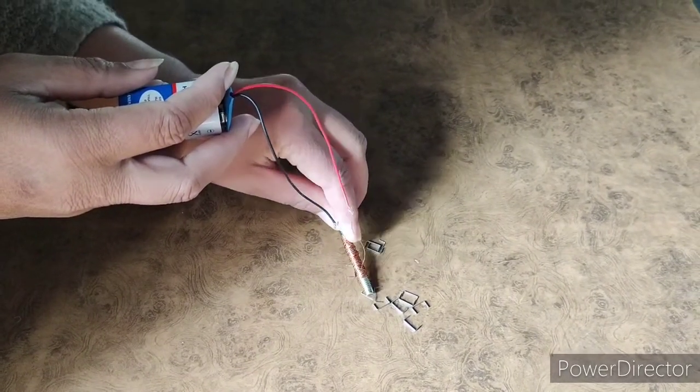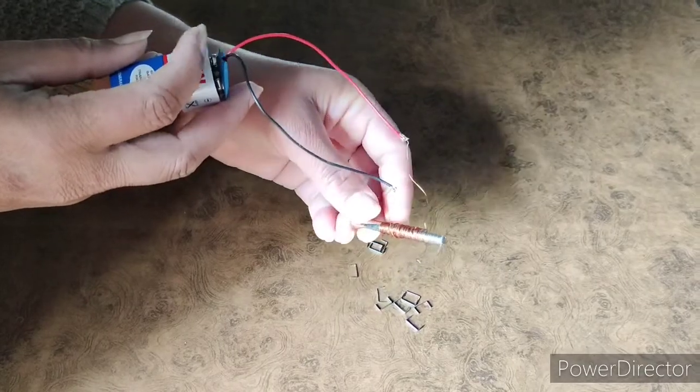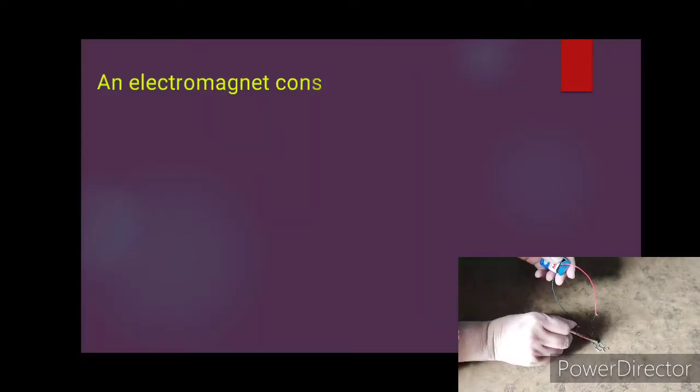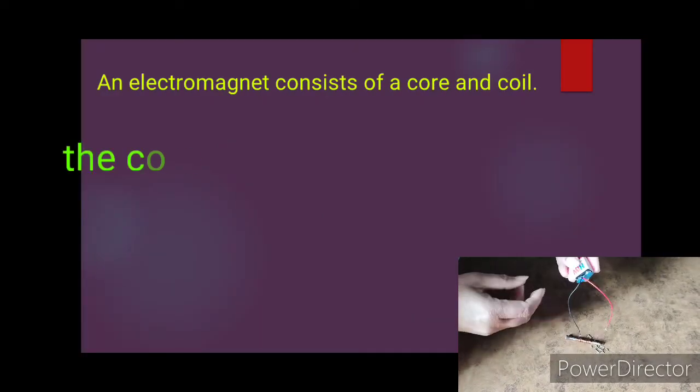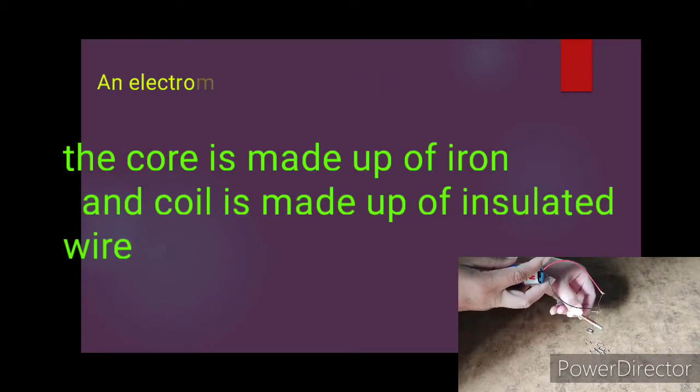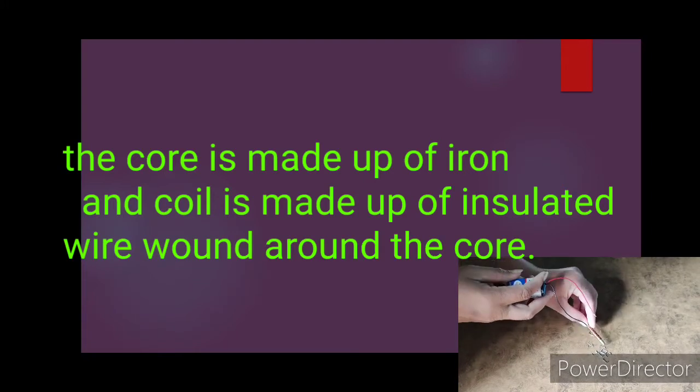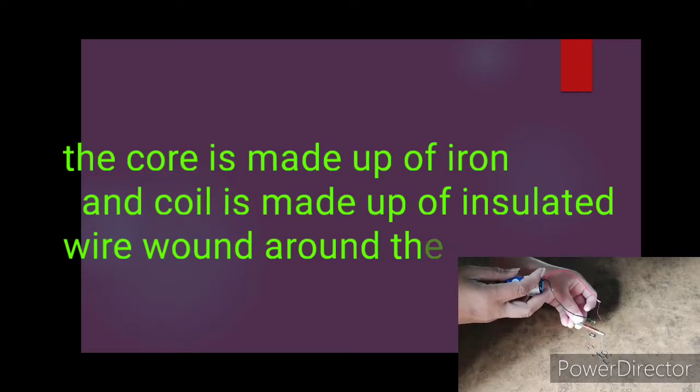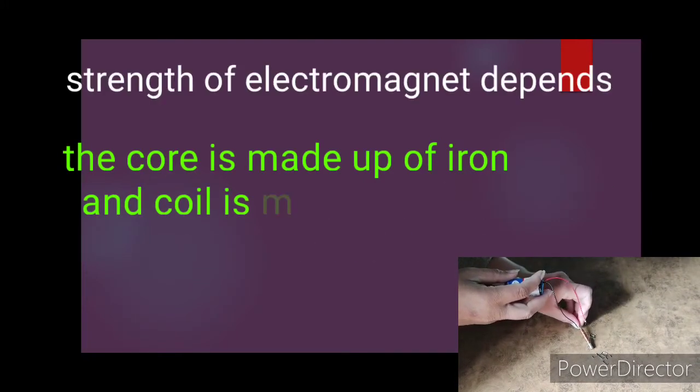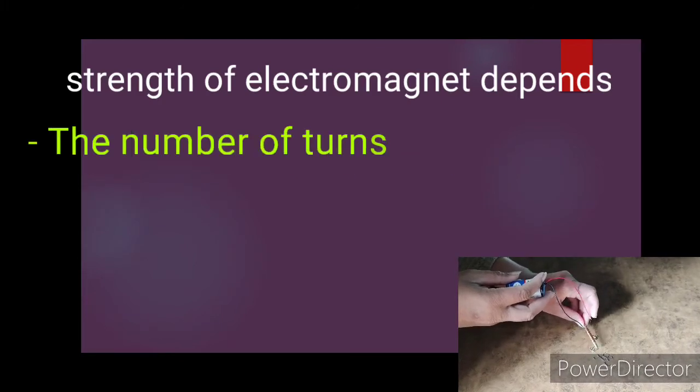An electromagnet consists of a core and a coil. The core is made up of iron, and the coil is made up of insulated wire wound around the core. The strength of the electromagnet depends on the number of turns of the coil.